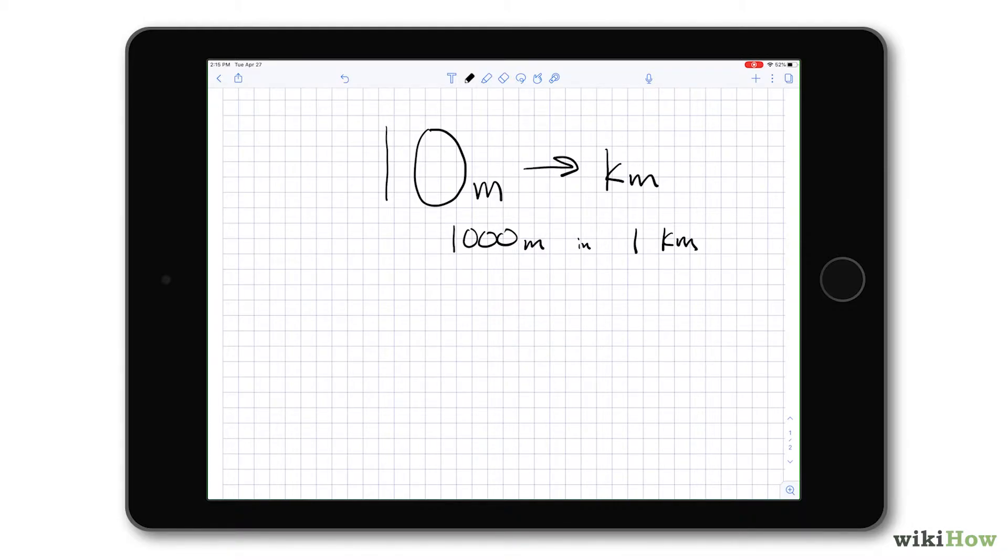Step one is you write down the starting unit, in this case 10 meters, and then right after that we're gonna put a set of parentheses open and closed with a division line right down the middle.